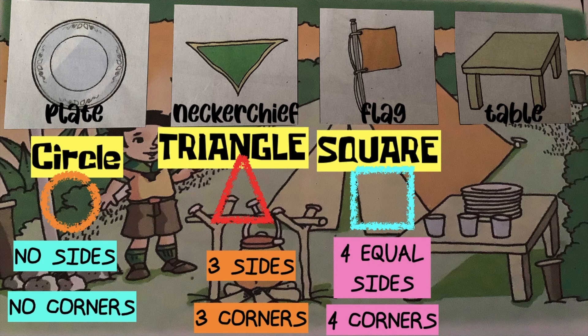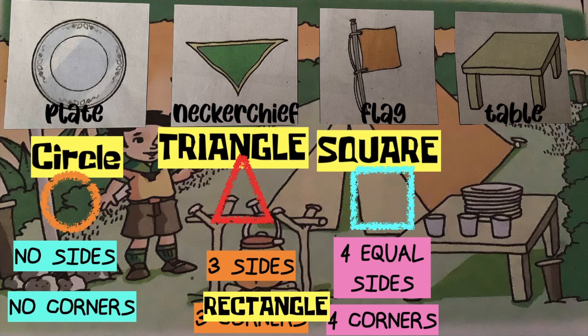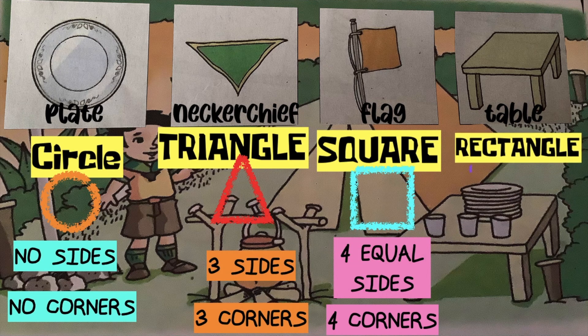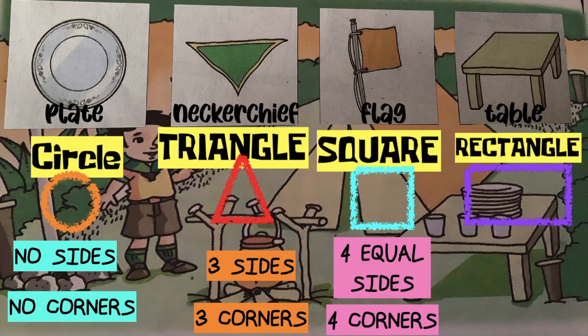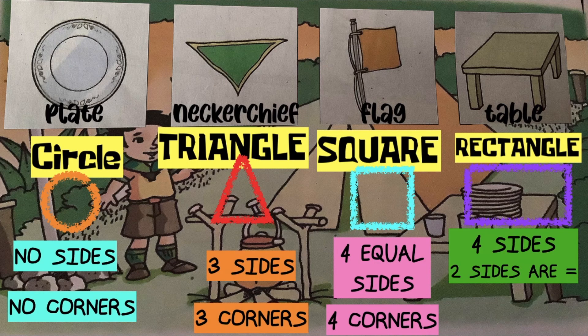Which of the objects drawn shows a rectangle? Good job! It's top of the table. How many sides does a rectangle have? Very good! It has four sides and two sides are equal. How many corners?